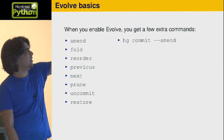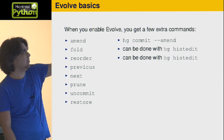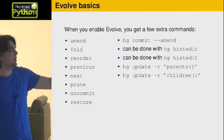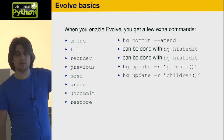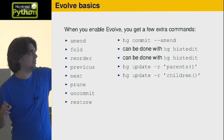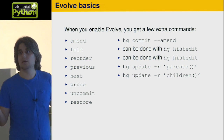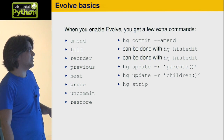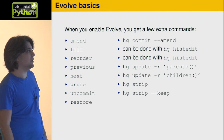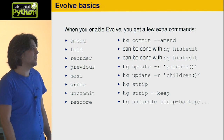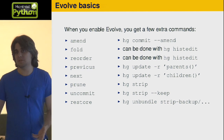Amend is already hg commit --amend. Fold and reorder can already be done with hg histedit. Previous and next can already be done by updating to the parent or to the children — that notation with the parents in brackets are revsets. Pruning can also be done with hg strip. Uncommit can be done with hg strip --keep, keeping your changes in the working directory. And restore can be done by unbundling the strip backups.